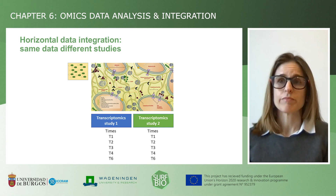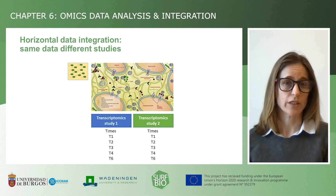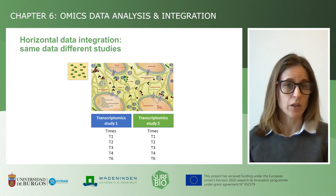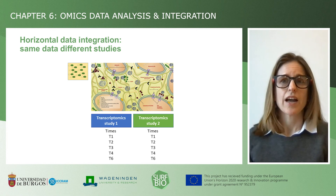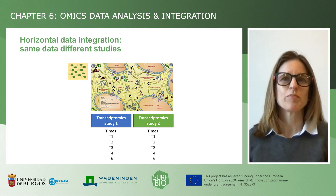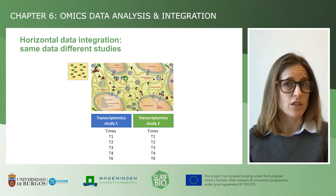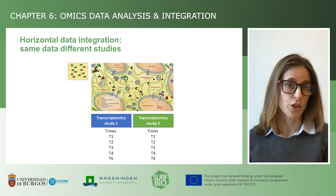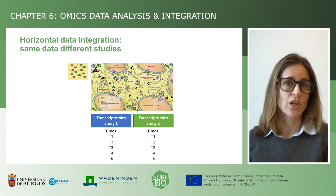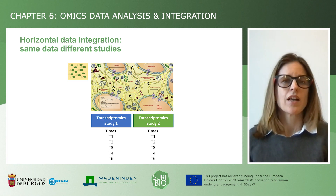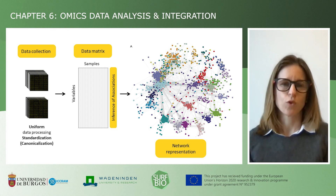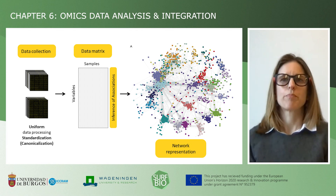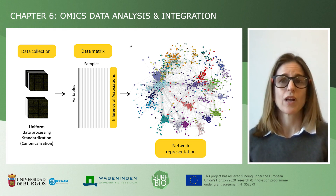When do you want to integrate data? Basically when you want to find further associations among them. One case could be in our biofilm example when you collected data on the transcriptional activity of your biofilm at different times, and another lab has collected data on the same sample type that could be added to your analysis. Or you added extra transcriptomics experiments on the same sample type in different conditions. In this case, you have the same type of variables — namely the active genes — measured across different studies. For such a case, there is a general workflow to find associations, starting by making the data uniform, for example by processing them in the same way so that you can put all variables and conditions together.